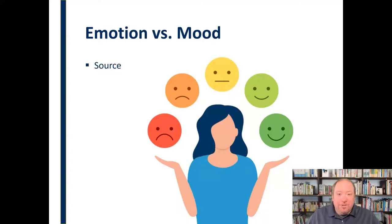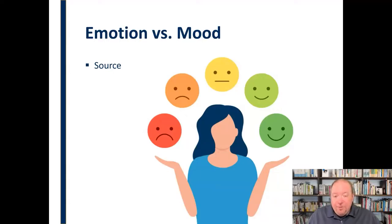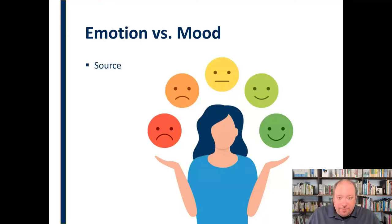Moods just kind of fall on us. They come out of nowhere — it could be as simple as waking up on the wrong side of the bed. We don't really understand where moods come from, but we know where emotions come from. Emotions are triggered by a specific event and come from a source.